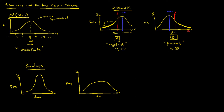If you have a broad, flat distribution it's called platycurtic. If you have this high, peaked type of shape it's called leptocurtic. Leptocurtic corresponds to a gamma 2 value that is positive, and platycurtic corresponds to a gamma 2 value that is negative.